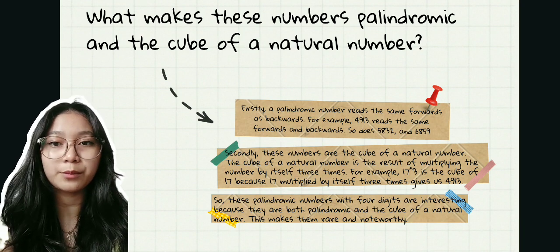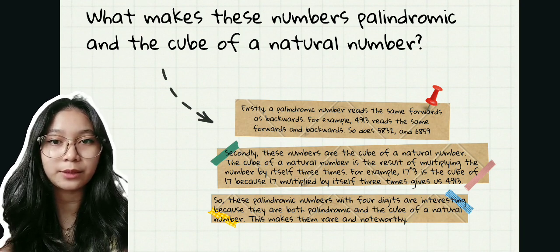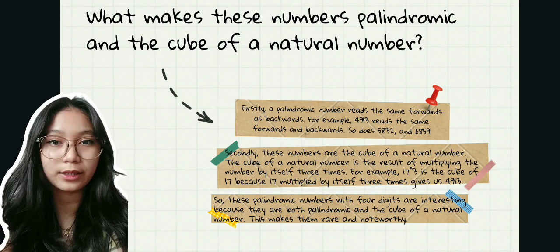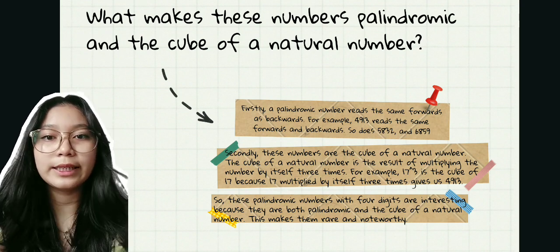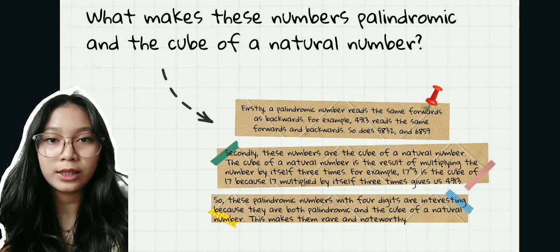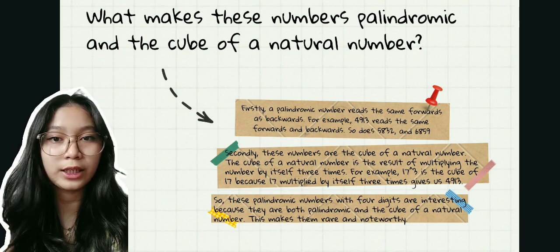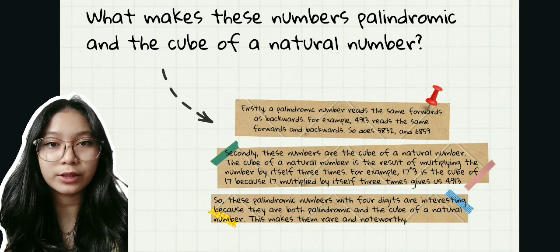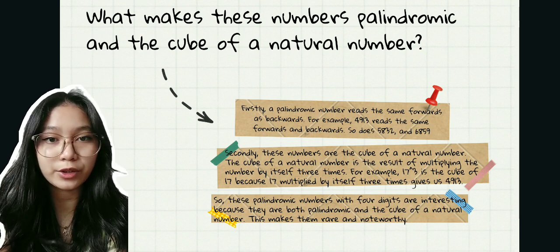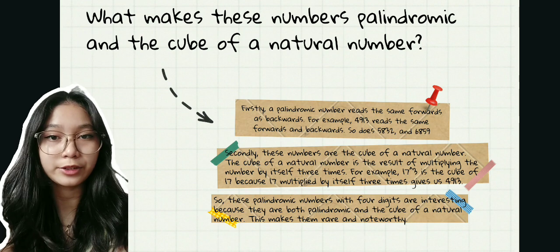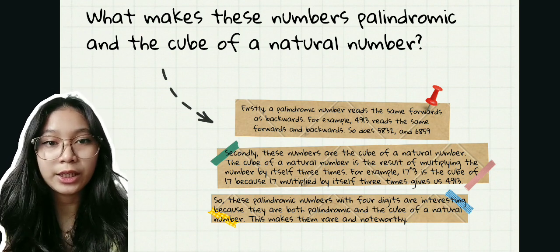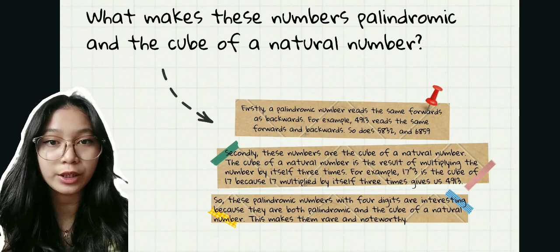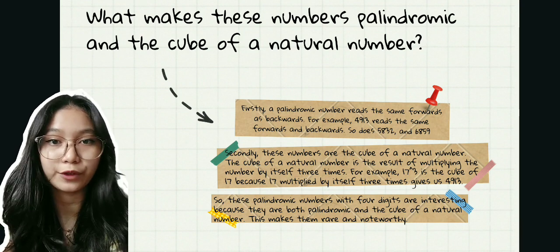These palindromic numbers with four digits are interesting because they are both palindromic and the cube of a natural number. These make them rare and noteworthy. Additionally, it's interesting to note that the smallest palindromic cube is 5,832, which is 18 raised to 3, and that there are only four such numbers with four digits.